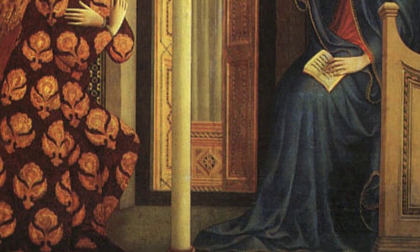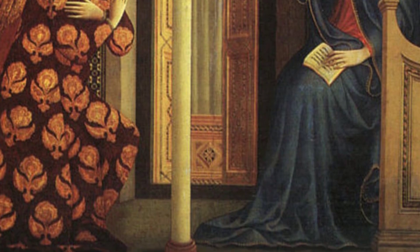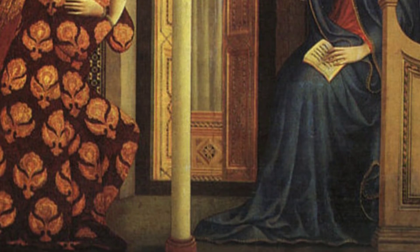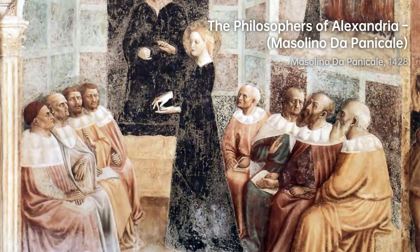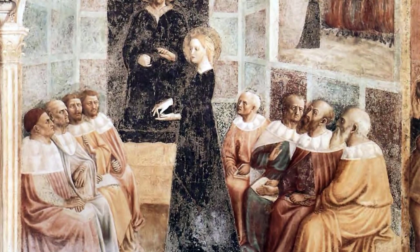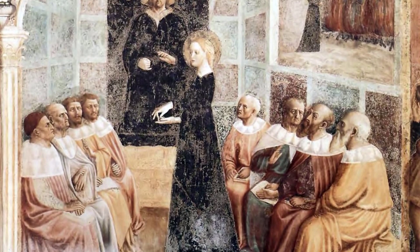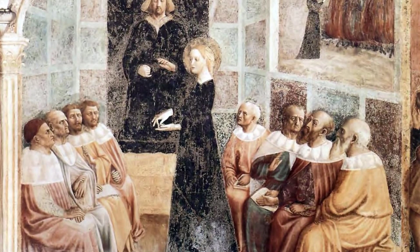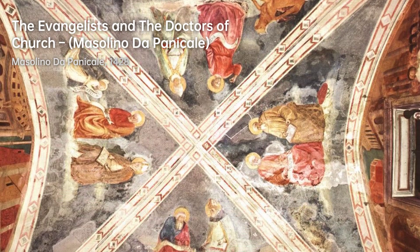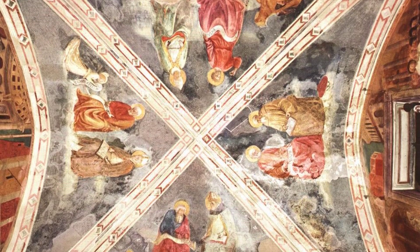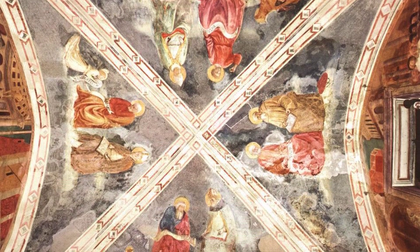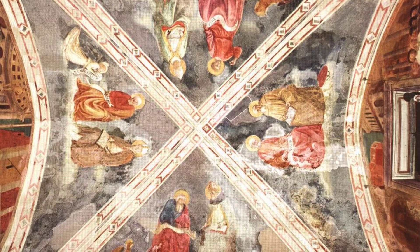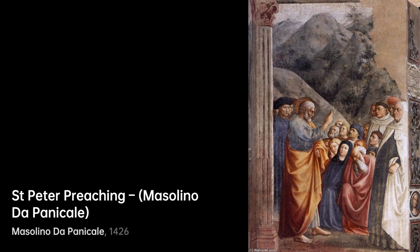During his travels, he painted religious scenes for prominent patrons, such as the altarpiece for Pope Martin V's family chapel in the Basilica of Santa Maria Maggiore, and the Saint Catherine Chapel in the Basilica of San Clemente, Rome, for Cardinal Brando de Castiglione. Some of Masolino's notable paintings include Healing of the Cripple and Raising of Tabitha, the Annunciation, and The Philosophers of Alexandria.